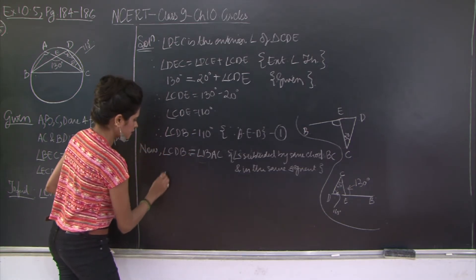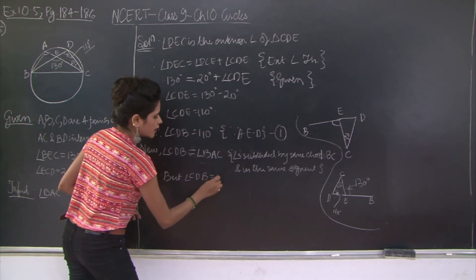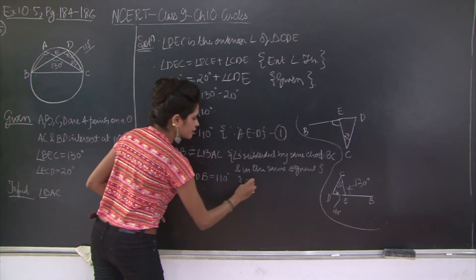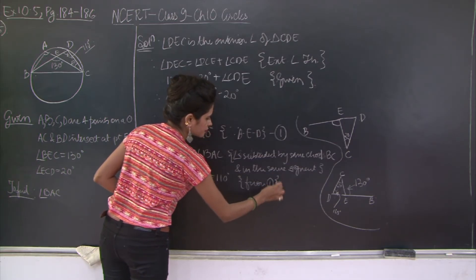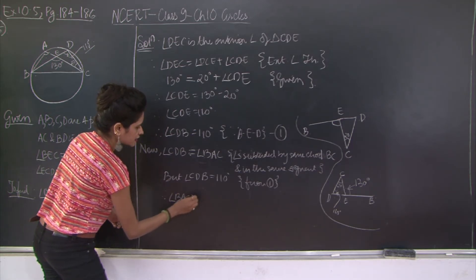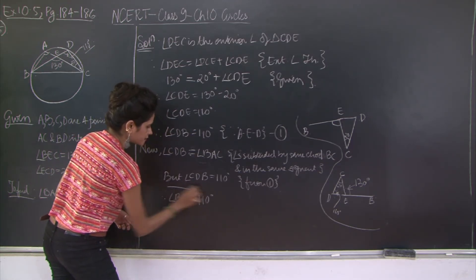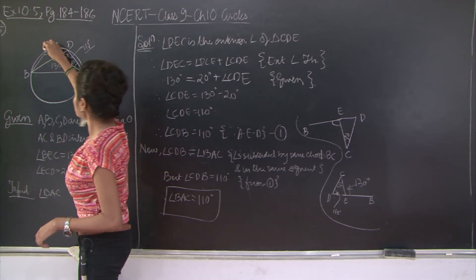Therefore angle CDB is equal to angle CDB is equal to 110 degrees. This is given. This is from 1. Therefore angle BAC is equal to 110 degrees.